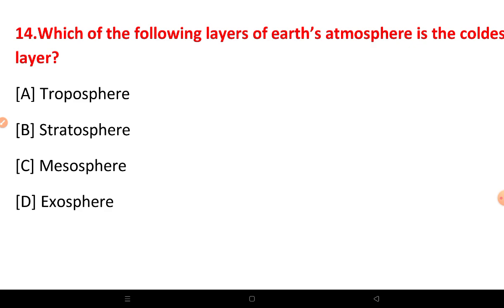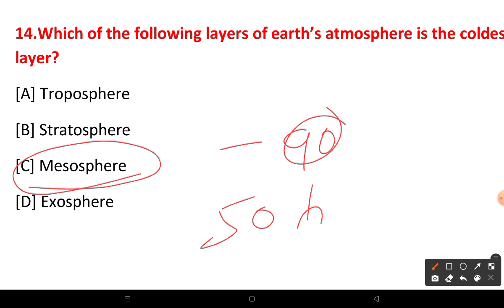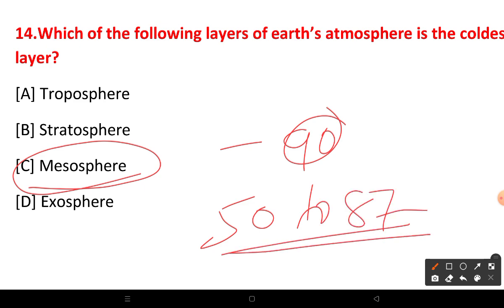Which layer of the Earth's atmosphere is the coldest layer? The options are: troposphere, stratosphere, mesosphere, and exosphere. The correct answer is the mesosphere — it is the coldest layer, with a temperature as low as minus 90 degrees. It extends from approximately 50 km to 87 km above the Earth's surface.